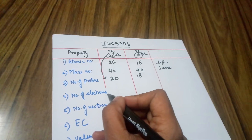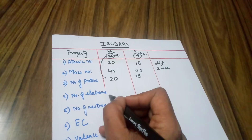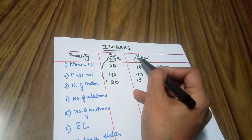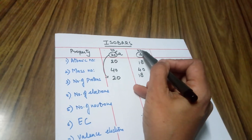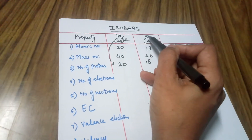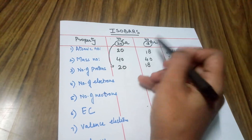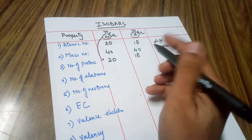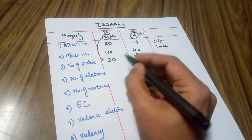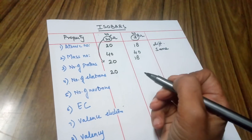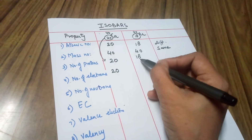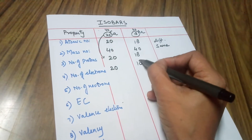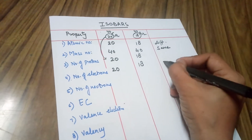Talking about number of electrons — electrons are the negative identities. Since there is no charge mentioned on either element, both of them are neutral. If they are neutral, the number of protons and electrons should remain the same. Hence for calcium, the number of protons is 20, so the number of electrons is also 20. For argon, the number of protons is 18, so the number of electrons is also 18. Again there is a difference here.